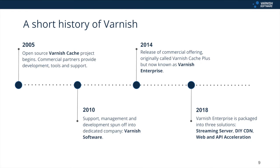It's useful to touch on the history of Varnish to see how it began and how it's progressed over the years. It originated as an open source project in 2005, before support, management, and development of this project spun off into a dedicated company called Varnish Software, who later released a commercial offering now known as Varnish Enterprise. The wider content delivery market was crying out for a way to use Varnish for a wider variety of use cases — new demands appeared for things like streaming video live and on demand, and building custom CDNs — use cases that have now grown to be by far the largest proportion of internet traffic.